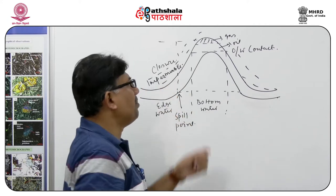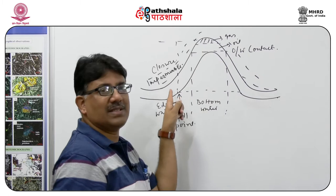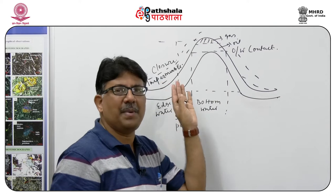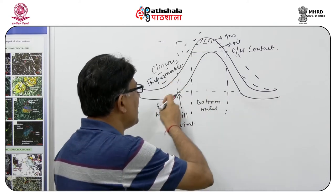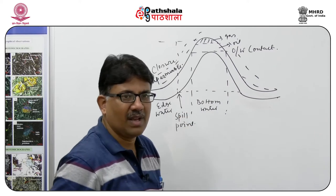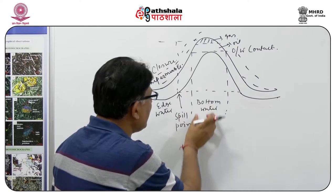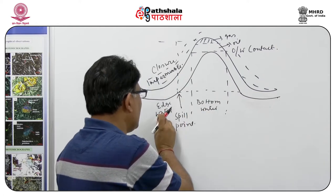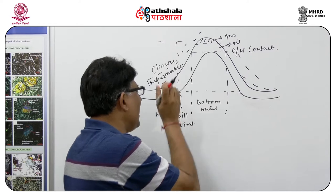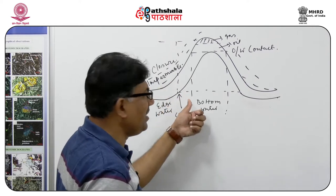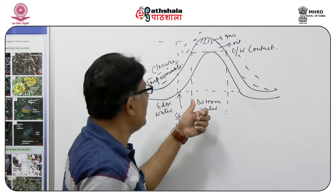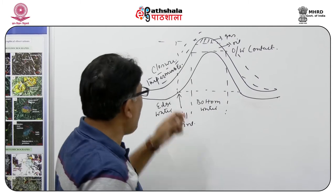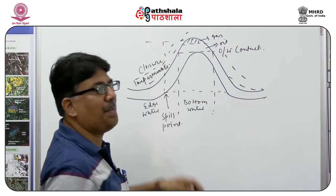This impermeability both above and sideways will not allow the hydrocarbon to escape from the trap, and the water will be pushed downward as well as sideward. The water we get just at the bottom we call the bottom water, and the water we get at the edge or sideways we call the edge water. What is a spill point? A spill point is the minimum structural contour in an antiform up to which there can be accumulation of hydrocarbon.